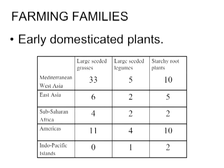Within the five major regions of the world, when we consider the domestication of plants, much of this is focused upon three categories of plants useful for food. The first is large seeded grasses like corn, wheat, and rice. The second is large seeded legumes such as soybeans, pinto beans, and things like that. The third category is starchy roots such as taro, sweet potatoes, yams, and cassava.